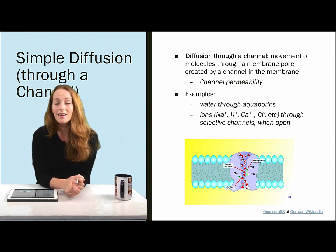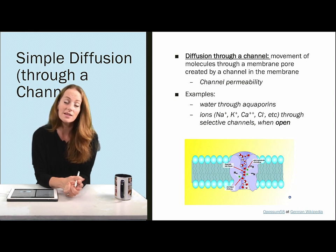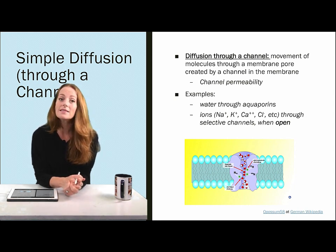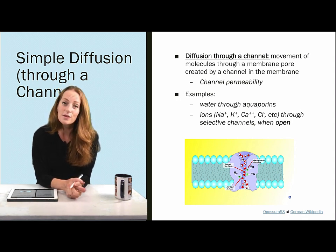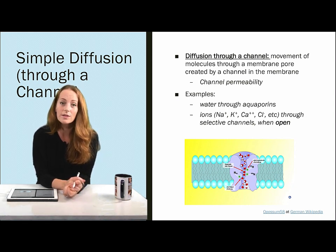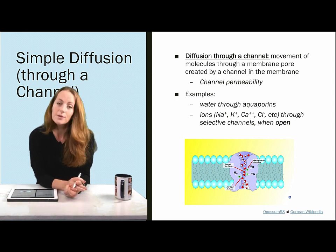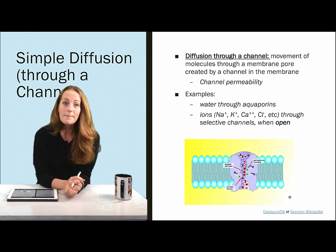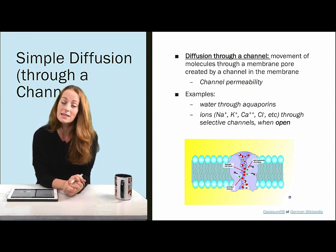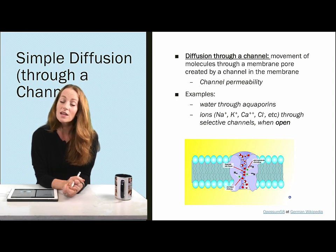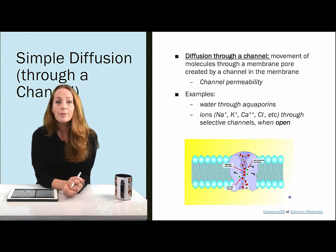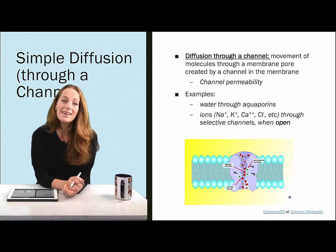There's also diffusion through a channel — where an ion channel that doesn't require energy to open is gated by some other mechanism. Once that channel is open, there's free movement of that particular molecule following its diffusion gradient. Diffusion through a channel applies to molecules like ions — sodium, potassium, calcium, chloride — which all have particular channels. There are also aquaporins, a specific type of water channel that is always open when present, allowing water to move freely across the membrane.